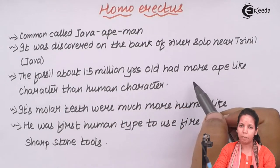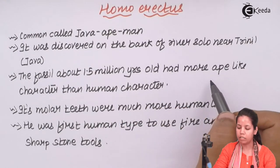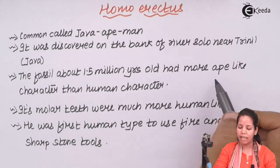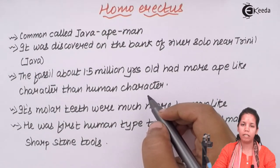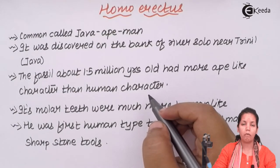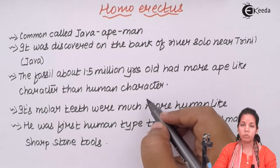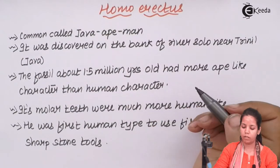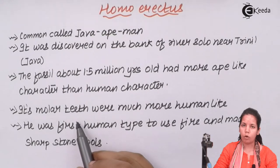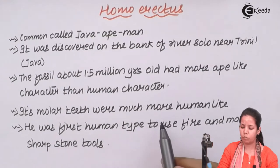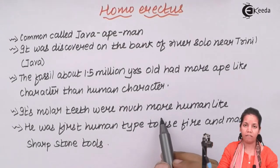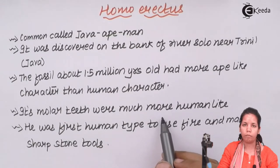This man basically had more appearance of an ape and less of human characteristic appearance. For example, it didn't have an erect posture, and it also had the presence of a tailbone, which we as humans don't have. Its molar teeth, used for chewing purposes, were much more similar to those we have in our mandible or chewing region of the mouth.